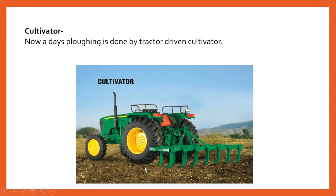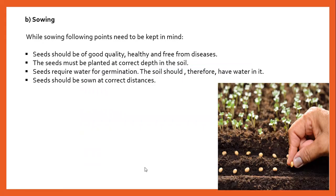Now, sowing. While sowing, a few points should be kept in mind. Seeds should be of good quality, healthy, and free from diseases. Seeds must be planted at the correct depth in the soil. Seeds require water for germination, so the soil should have moisture in it. Seeds should also be sown at correct distances from each other.